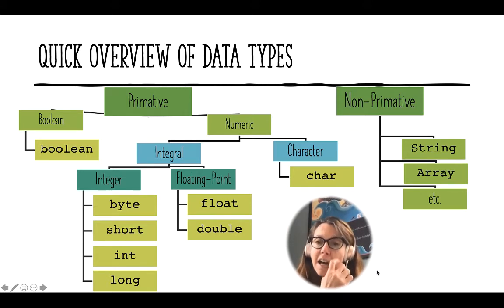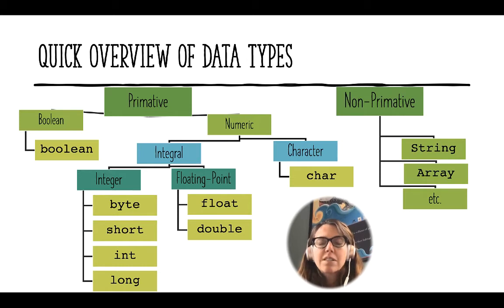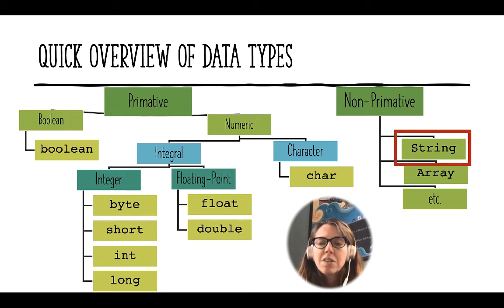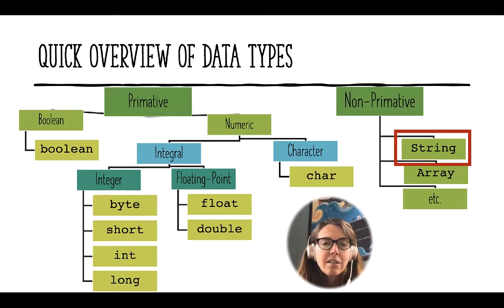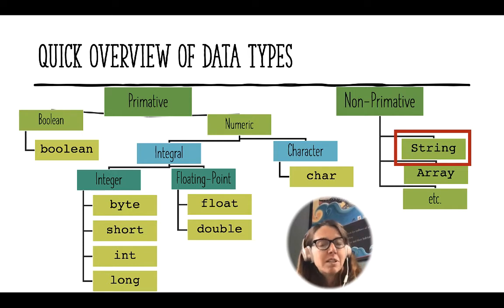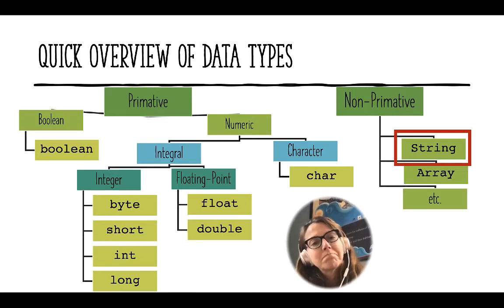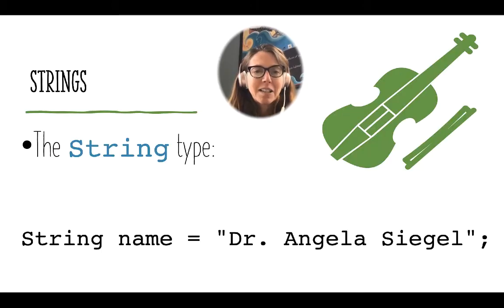Under the non-primitive branch we have strings and arrays. Strings are made up of a sequence of characters, and that's what we're going to focus on today. Arrays, which we'll see later, are made up of a sequence of other types, such as a sequence of integers. For now we're going to stick with strings.